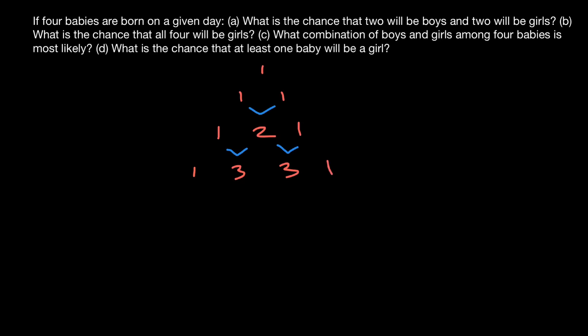In the next row, we again start with one. The next number is a combination of the two numbers above — four. Then the combination of the next two numbers gives six. The next combination gives four again, and we end with one.